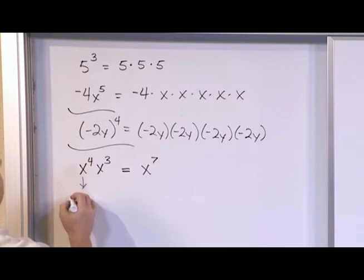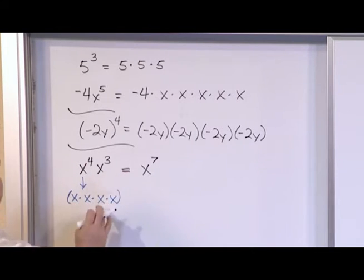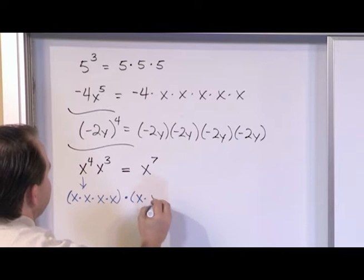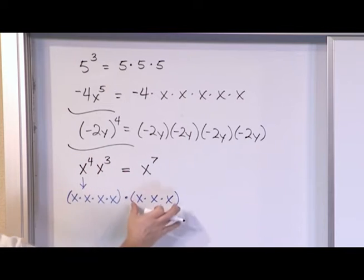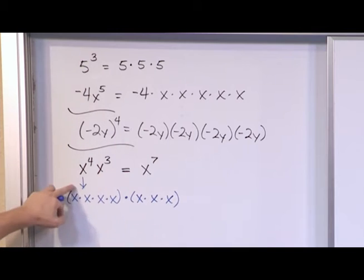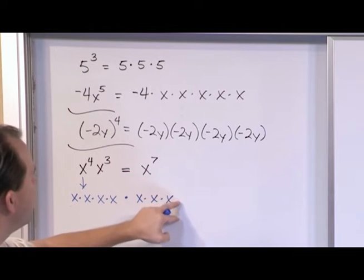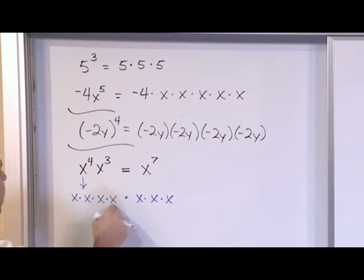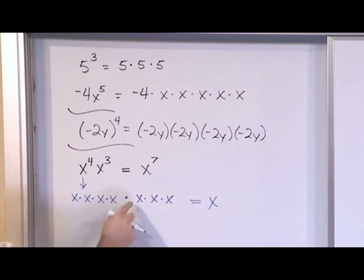Because what you really have here — x to the power of 4 is x times x times x times x, and it's multiplied by x to the third power, which is x times x times x. Everything is multiplied together, so the parentheses don't really matter much. What do I have here? I have x times x times x times x times x times x times x — x multiplied by itself 7 times. And that is why we add the exponents together.